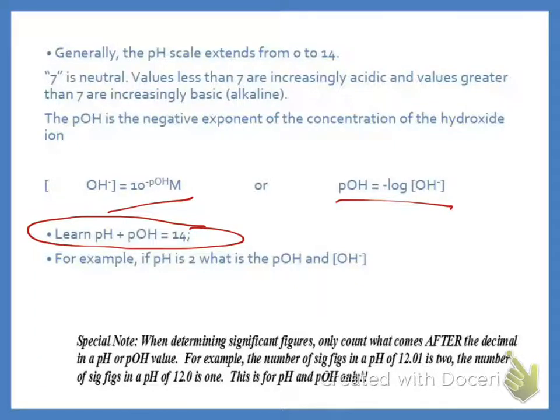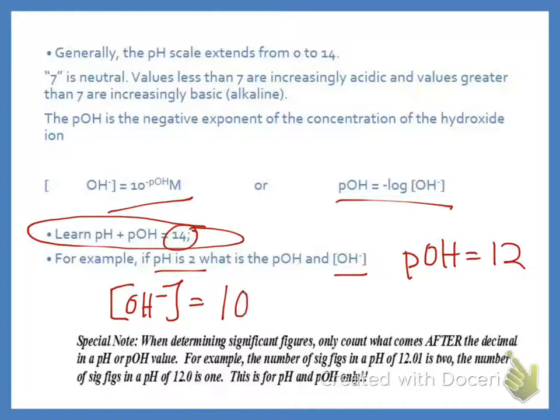For example, if I have a pH of 2, what is my pOH going to be and my hydroxide concentration? pOH is going to be 12, because I took 14 minus 2 and I got 12. So in order to find the hydroxide concentration, it would be 10 raised to the negative 12. If you were to do that in your calculator, it's basically this. Now, if you have a whole number, you can just leave it like that. If it is a decimal, you have to plug it into your calculator.